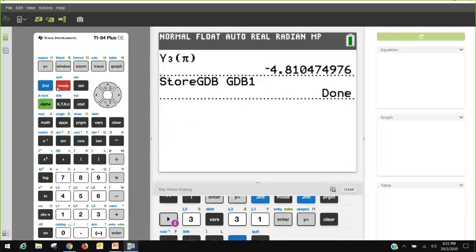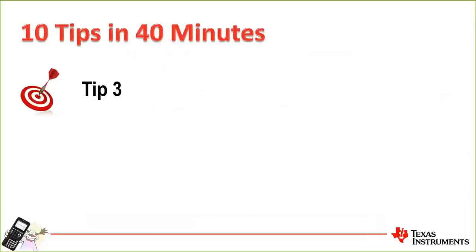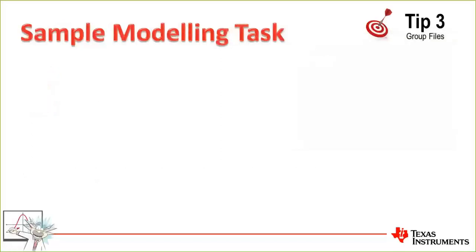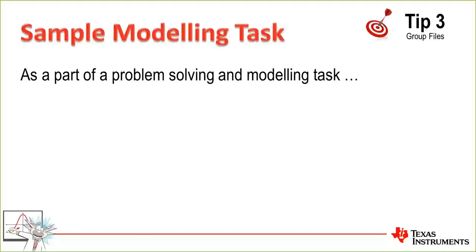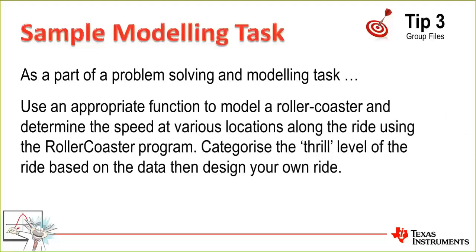Tip number three: Group — to save variables to flash memory. What does this mean in a normal school context? You might have a problem-solving and modelling task where you're modelling a roller coaster to determine the speed at various locations. We'll use a roller coaster program that generates data, categorise the thrill level based on that data, and then design our own roller coaster.